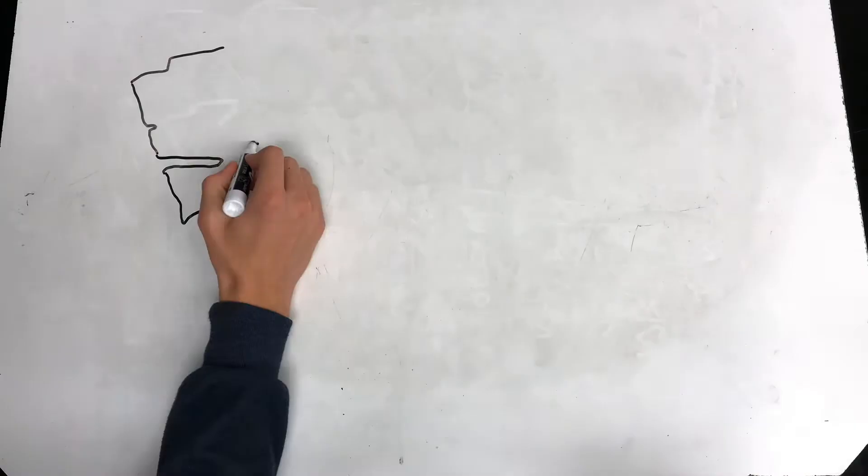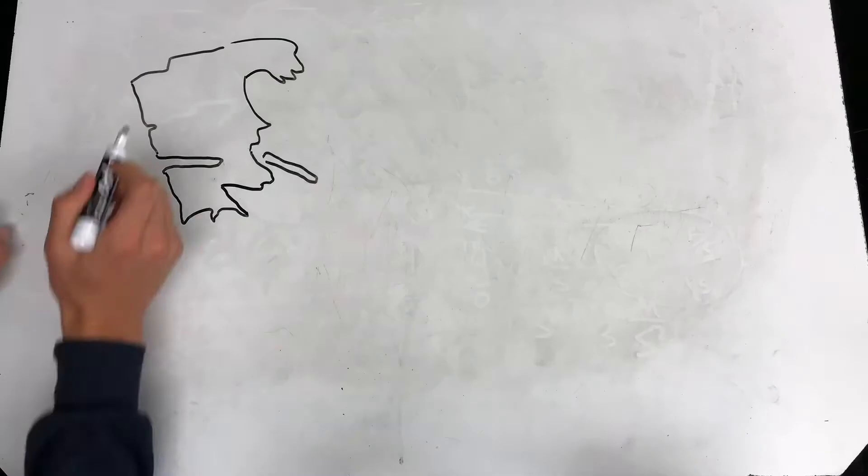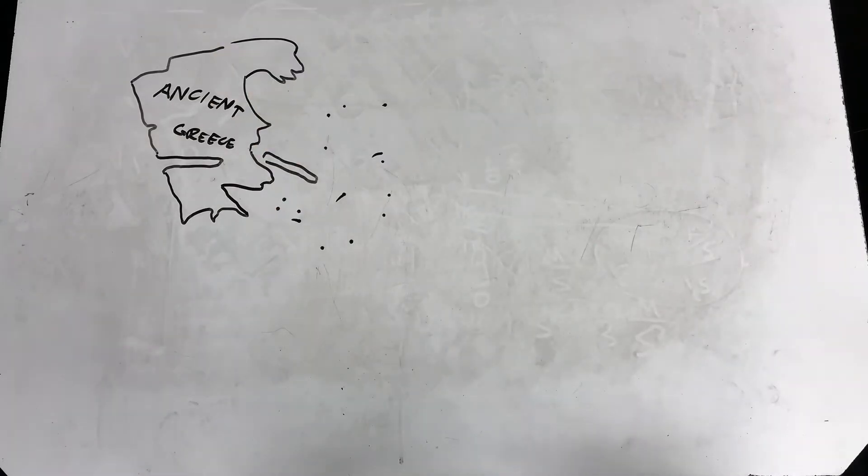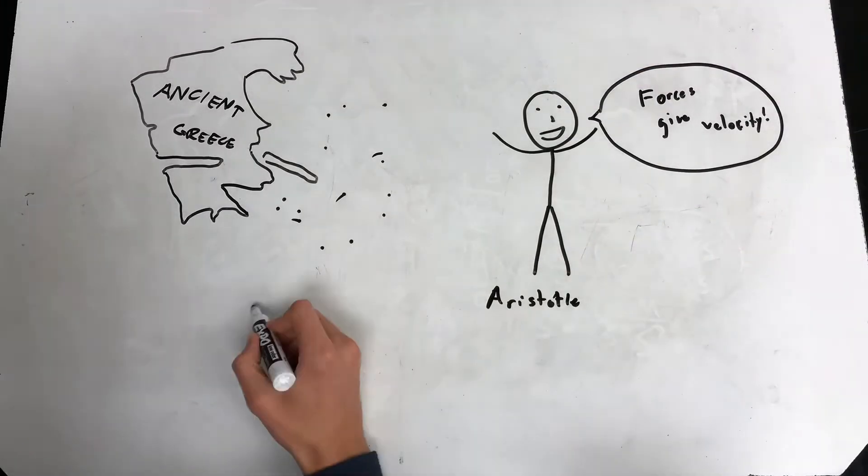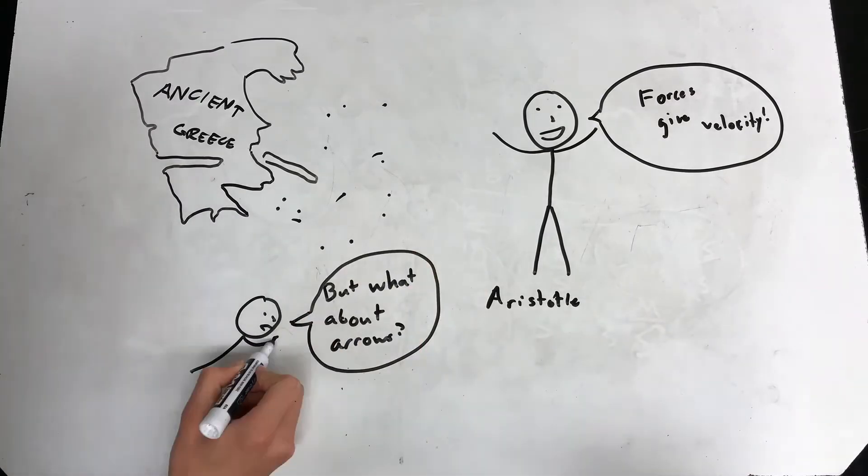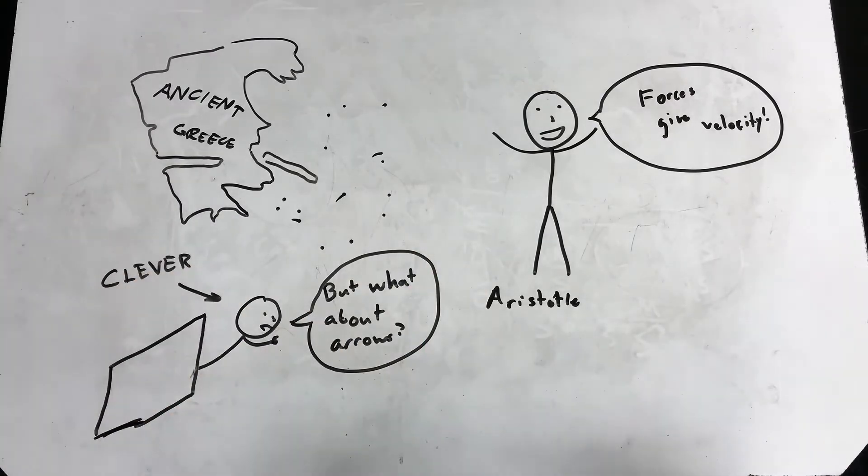A long time ago, in a place called Greece, there lived a man called Aristotle. He thought objects tended to stay at rest unless a force acted upon them. How do you explain arrows, then? some clever people asked. But Aristotle just said the air went around the arrow and pushed it forward. He also claimed freefall and heavenly motion were exceptions to his rule. Oh well.